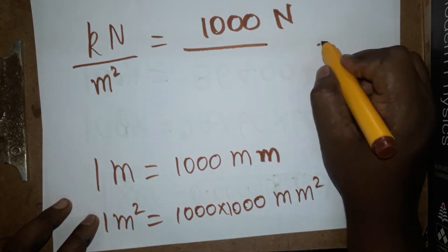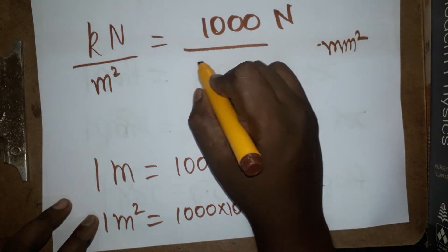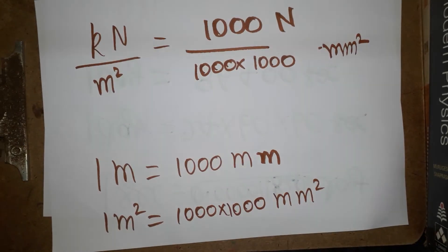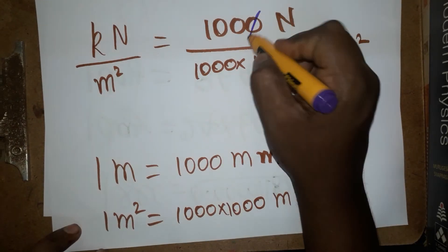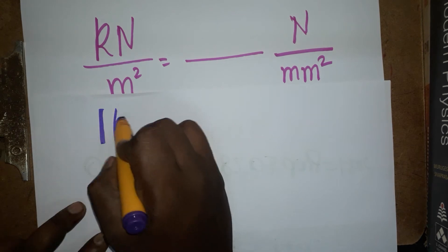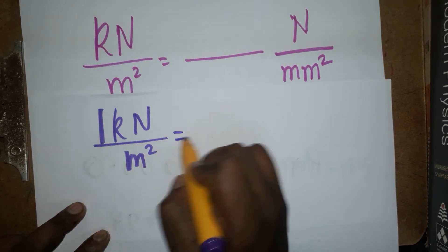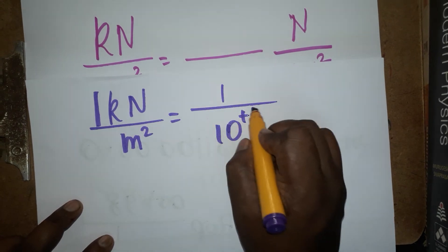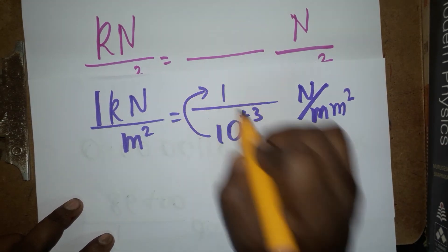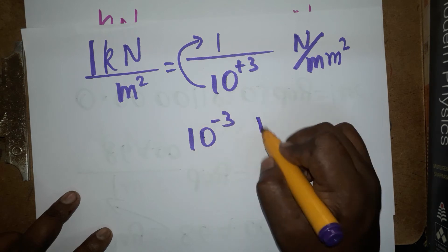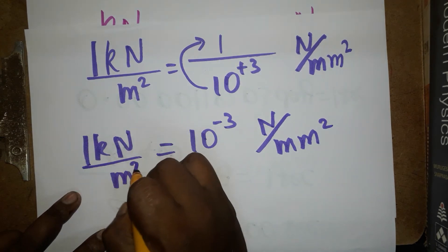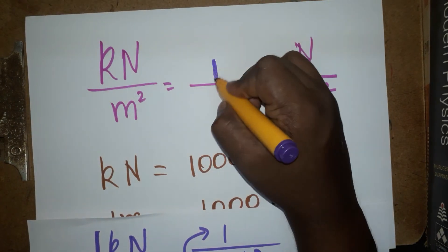Converting meter square to millimeter square, it is one thousand into one thousand. The thousands cancel — three zeros go from the numerator — so the denominator has three extra zeros. Therefore, one kilonewton per meter square equals one divided by one thousand newton per millimeter square, which is ten to the power minus three newton per millimeter square.